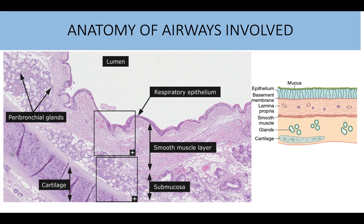Before we get into what exactly asthma is and where it affects, we need to focus on the anatomy of the airways involved. Looking at the illustration on screen, we have first the respiratory epithelium, and beneath that a basement membrane. Beneath the basement membrane we have the lamina propria, which contains the peribronchial glands, then beneath that a muscular layer, and then the submucosal layer which contains glands as well as cartilage.